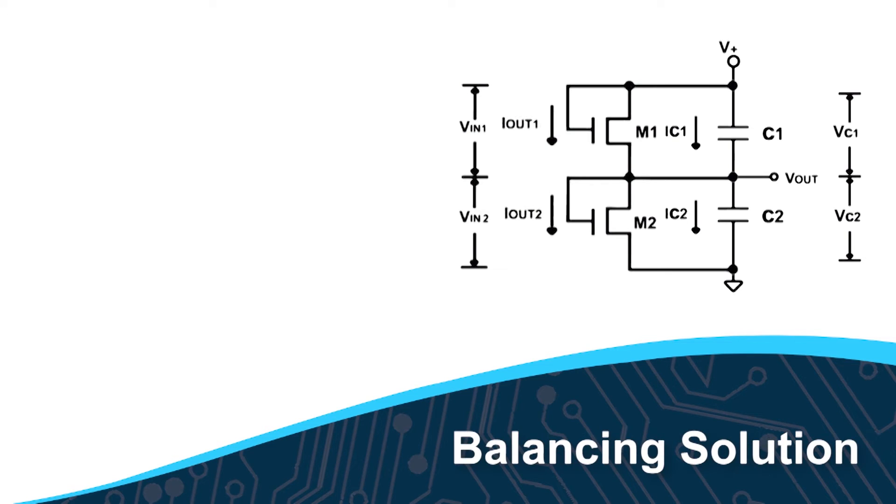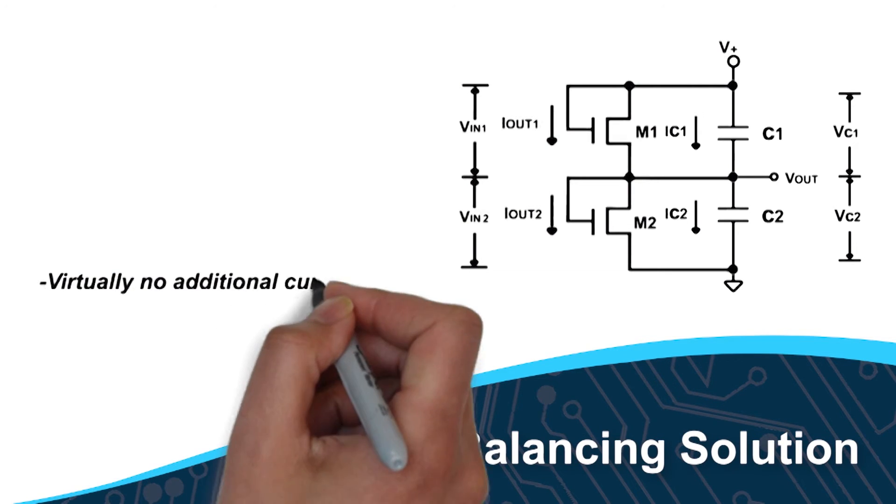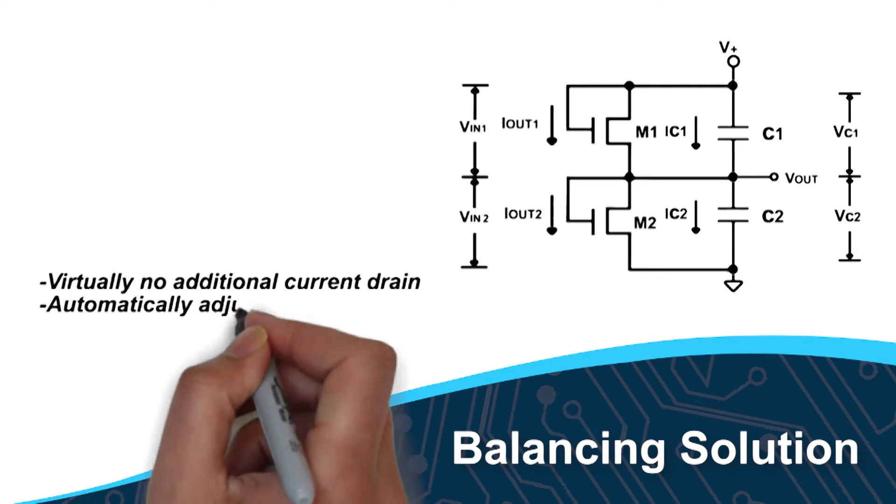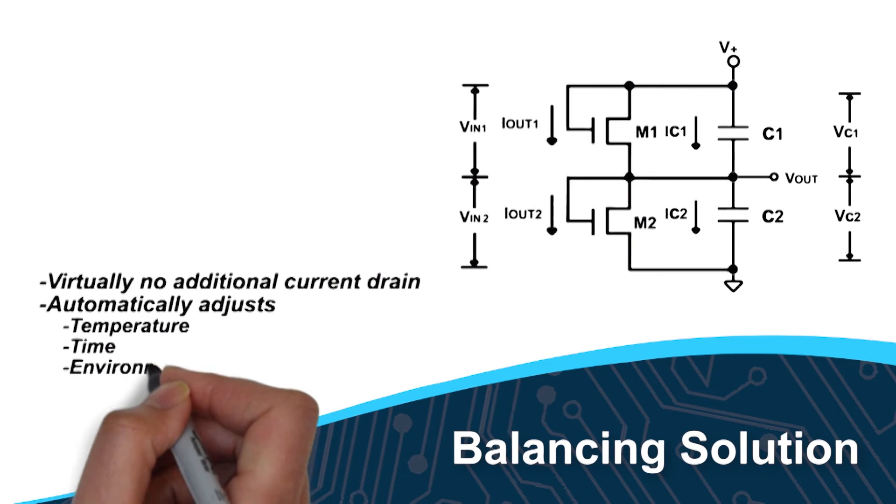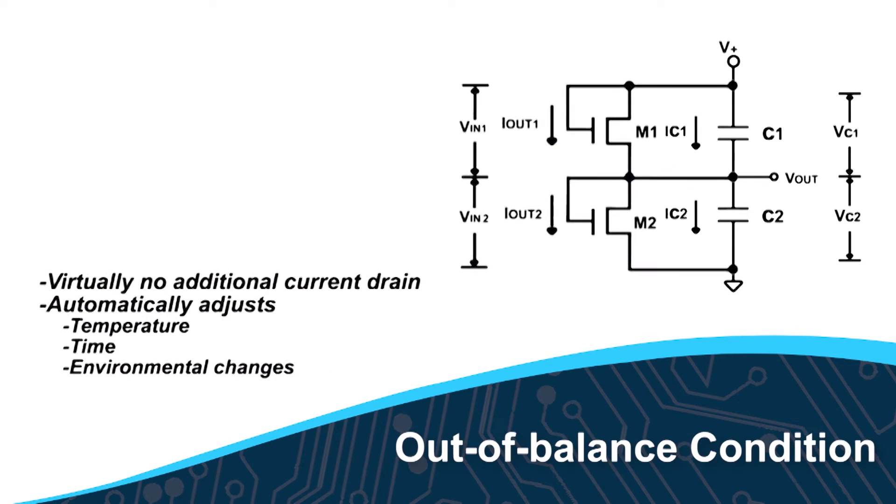The SAB MOSFET balancing solution contributes virtually no additional current drain and automatically adjusts for temperature, time, and other environmental changes that may contribute to out-of-balance conditions.